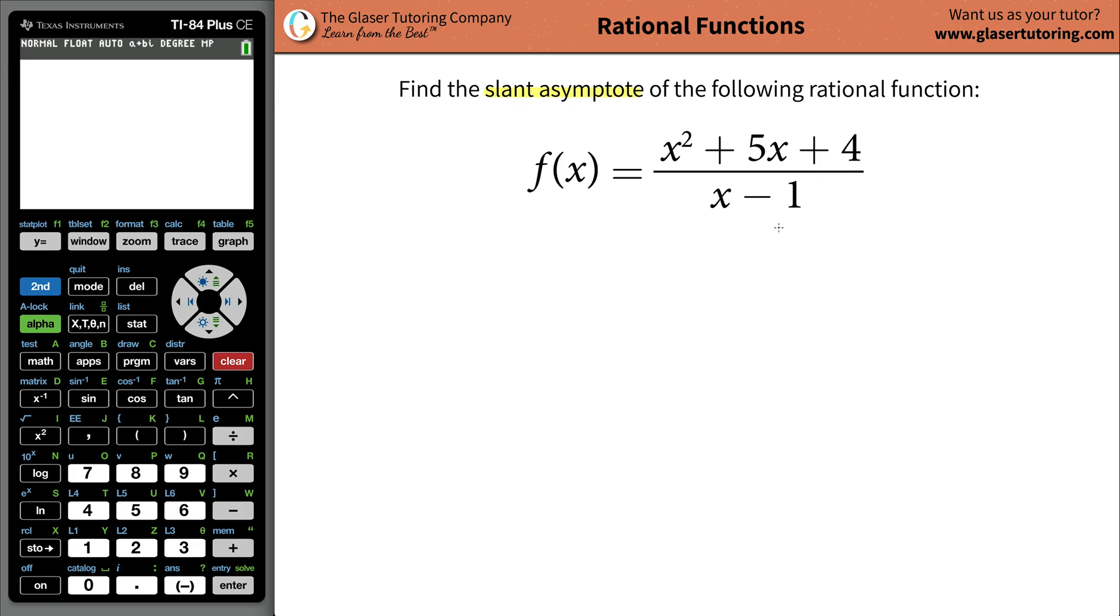Now, to find this, we can do synthetic division or long division. We can always use synthetic division whenever the denominator is to the first power, but if this becomes to the second, we've got a problem. Then we've got to do long division. So it might just be best to remember that when you're dealing with a slant asymptote, just use long division.